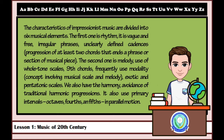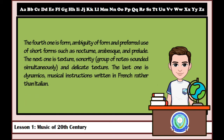The third element is harmony, which involves avoidance of traditional harmonic progressions. It also uses primary intervals — octaves, fourths, and fifths — in parallel motion. The fourth one is form, which features ambiguity of form and a preferred use of short forms such as nocturne, arabesque, and prelude. The fifth one is texture — sonority, which refers to a group of notes sounded simultaneously — with a delicate overall texture.